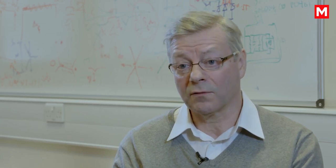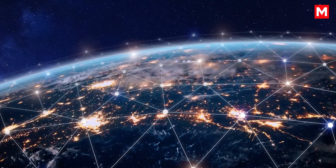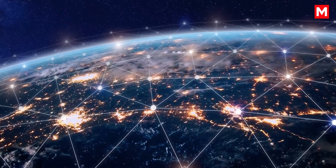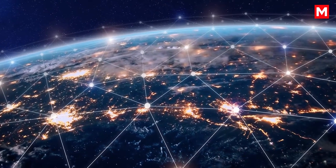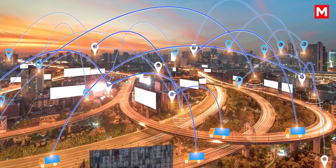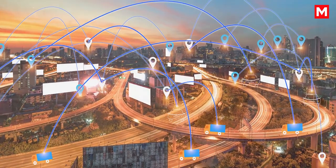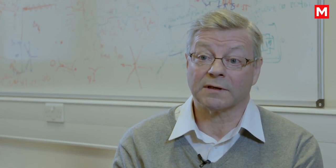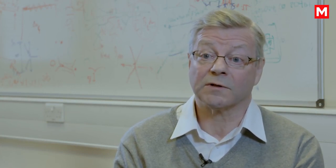We need new types of navigation because at the moment the world relies very heavily on the global network of satellites to tell everybody where they are, and it's actually rather easy for that system to be disrupted. In fact, it's been estimated that the UK alone stands to lose about a billion pounds a day if the satellite navigation system were denied.